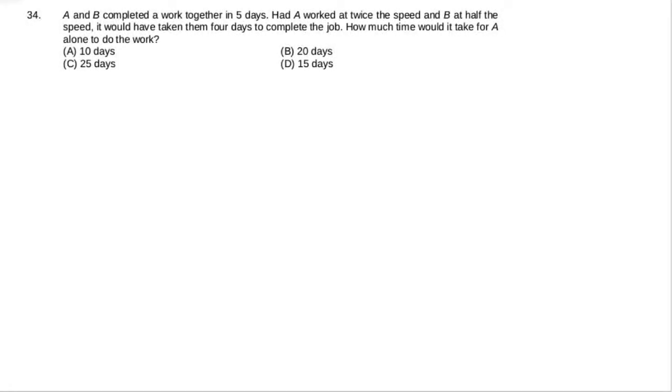Question number 34. In this question it is saying that A and B completed a work together in 5 days. Had A worked at twice the speed and B at half the speed, it would have taken them 4 days to complete the job. How much time would it take for A alone to do the work?